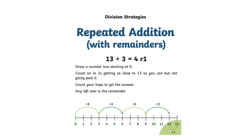If you have any leftovers, that's called the remainder. For example, count on in threes getting as close to 13 as you can but not going past it. Count your hops to get to the answer. As you'll see, there is one left over. We write this as 4 remainder 1.